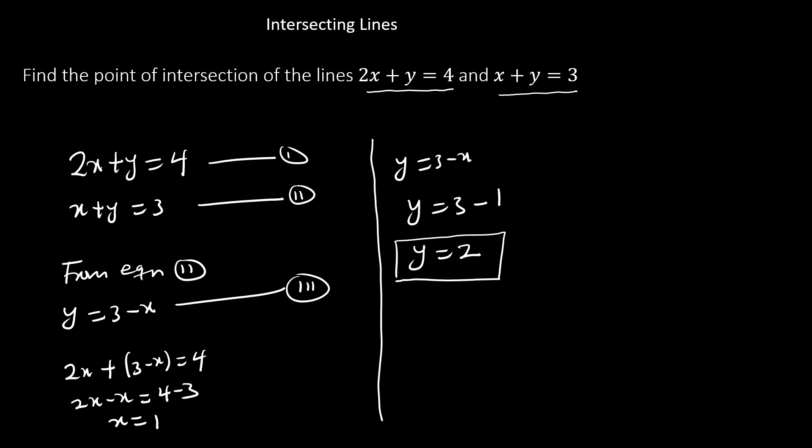So we have point y equal to 2 and point x equals 1. So the coordinate of the point of intersection of these two lines is at the point where we have 1 comma 2.